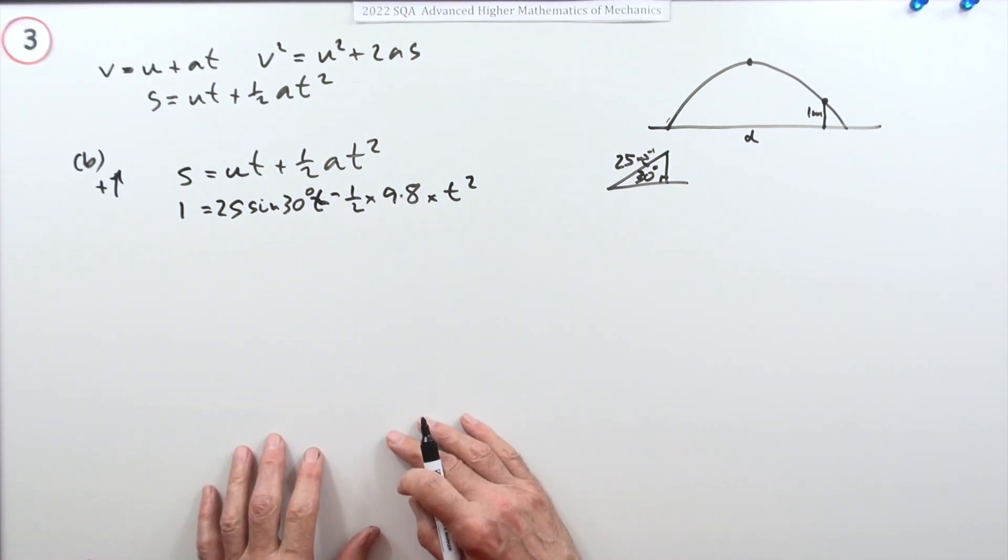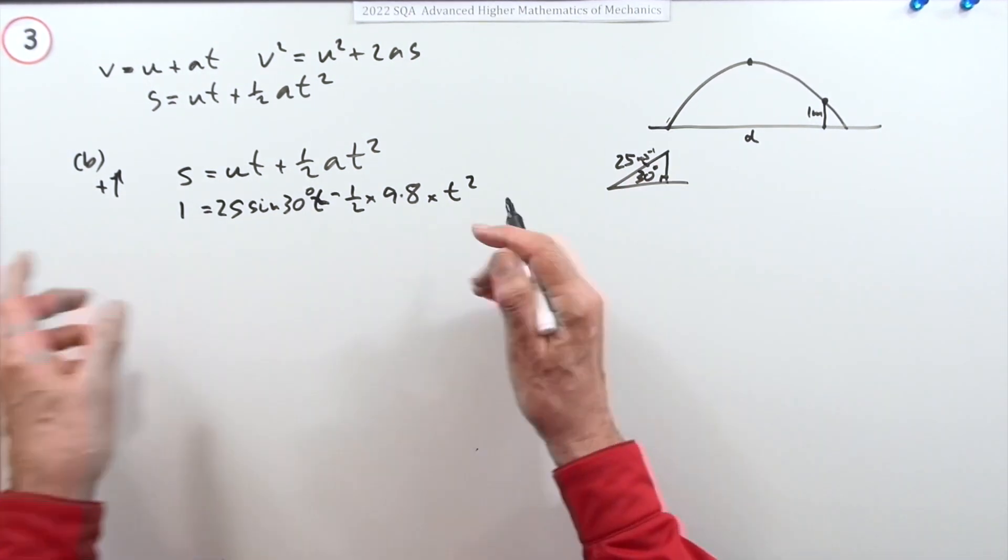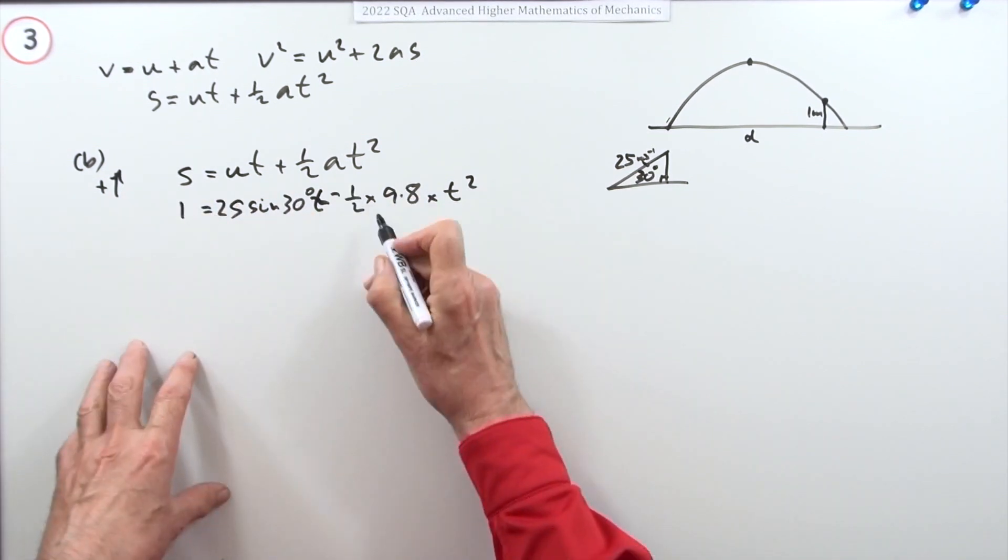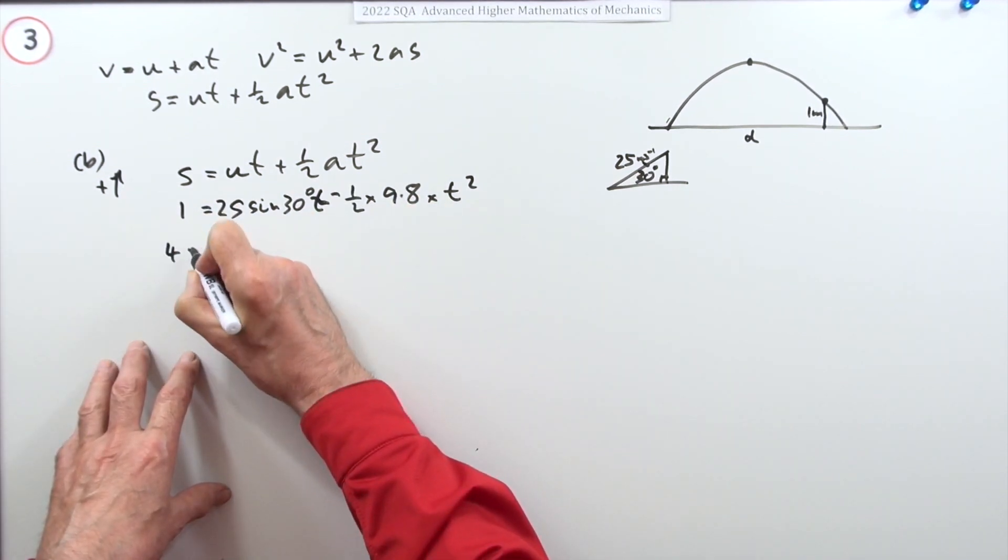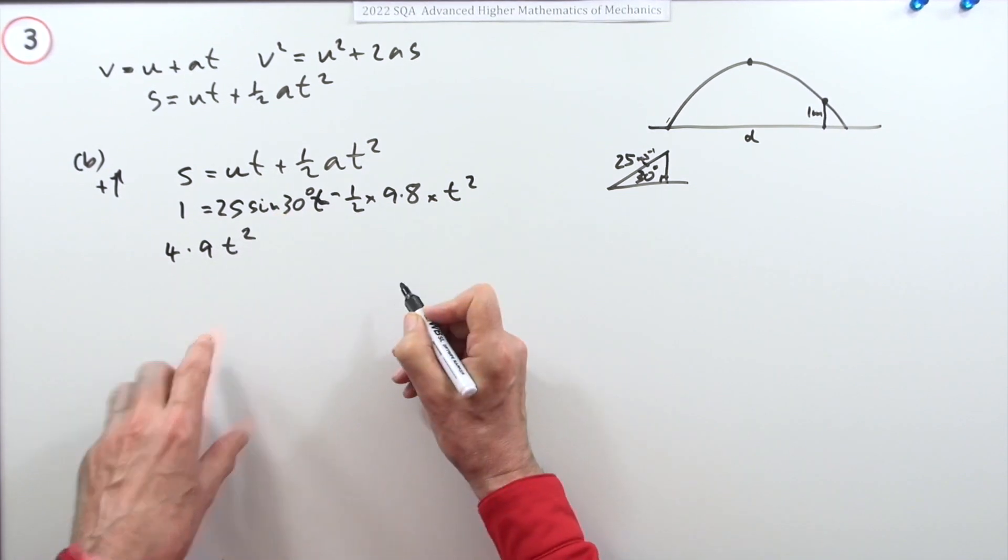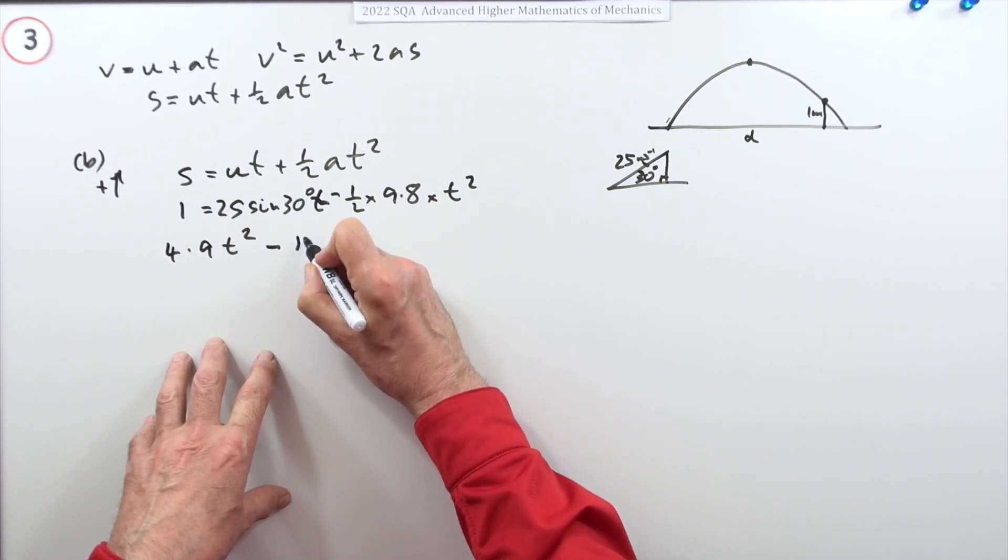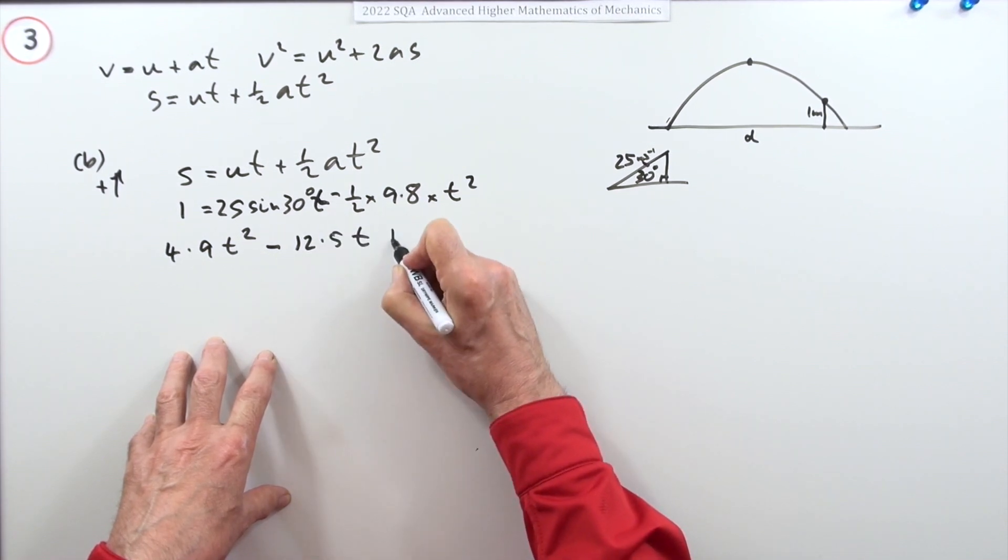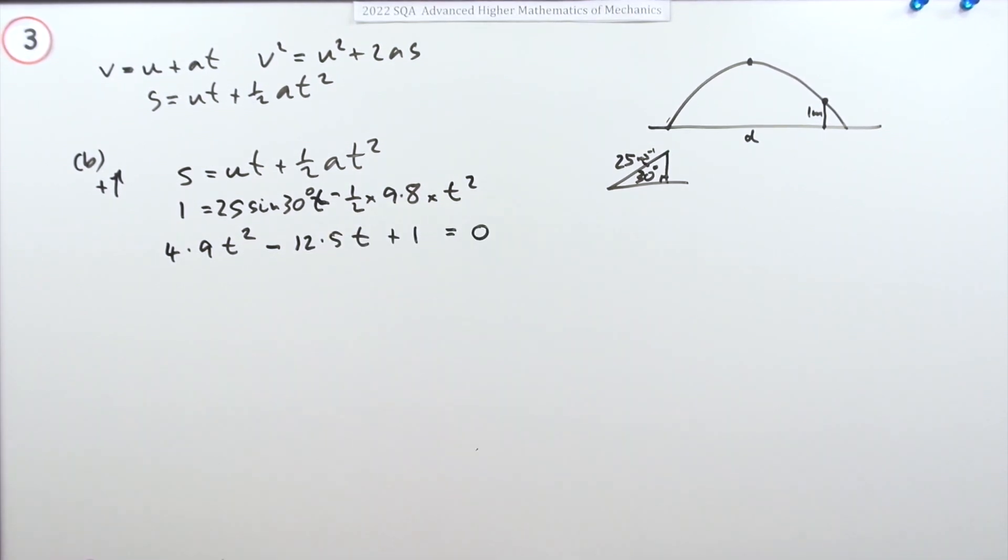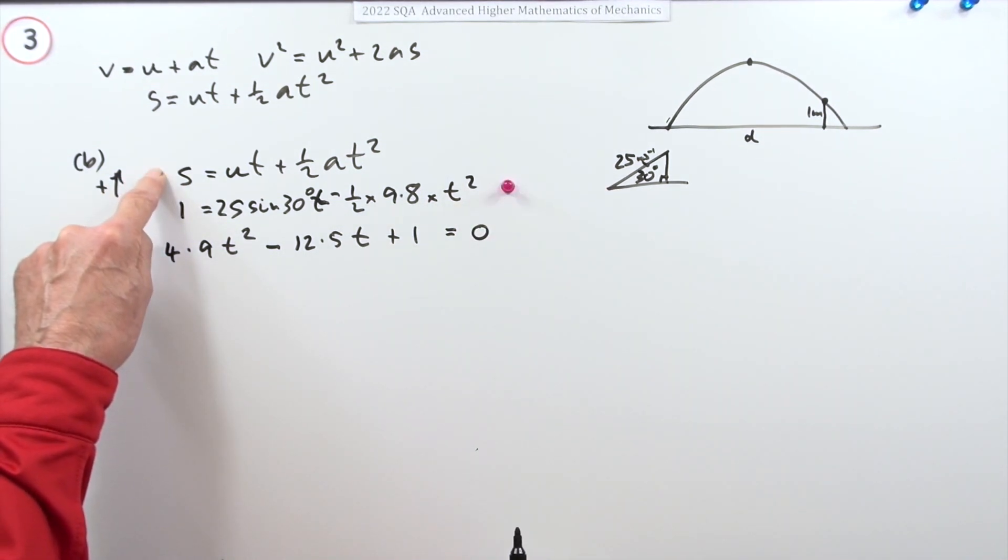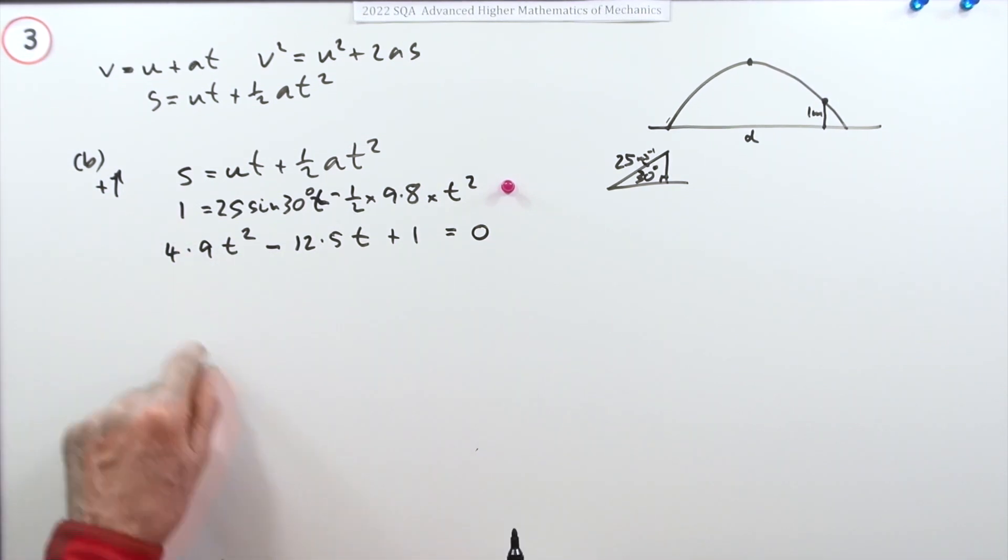You've got a quadratic equation, so you just have to rearrange it. I'll take this over here, so half of that, I've got 4.9t squared. Sine 30 is a half, so that will be minus 12.5t plus the one equals zero. There's one mark for choosing the appropriate equation to get the time and substituting the values.